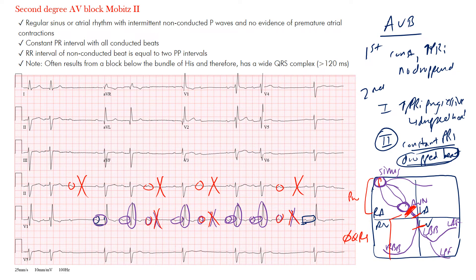The big difference from first degree is that there are dropped beats — in first degree there are no dropped beats. To differentiate: constant increased PR interval with no dropped beats is first degree AV block; progressive PR lengthening with a dropped beat is Mobitz type 1 (Wenckebach); constant PR interval with intermittent dropped beats is Mobitz type 2, which we're seeing here.